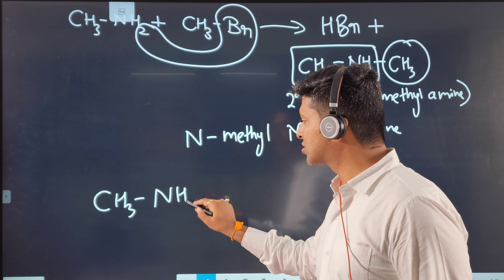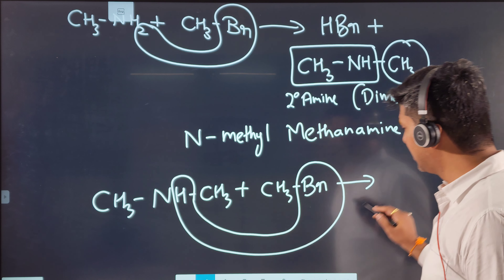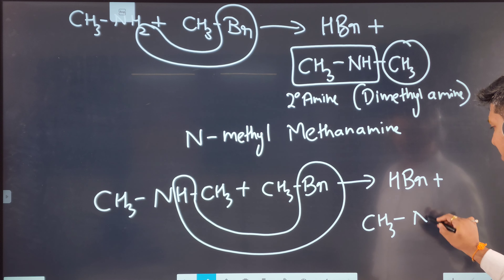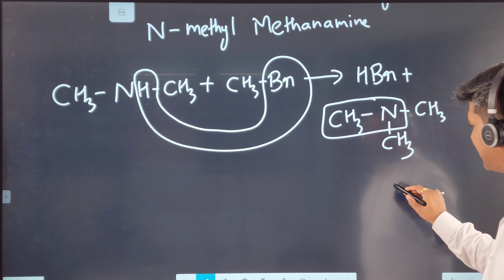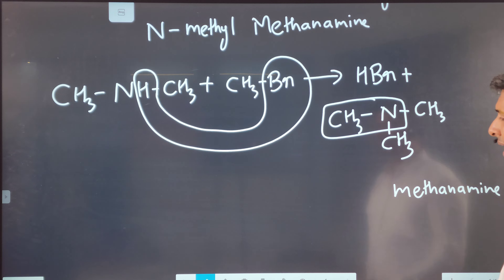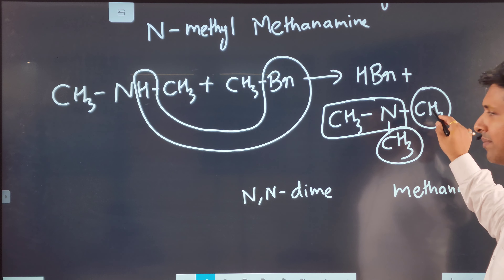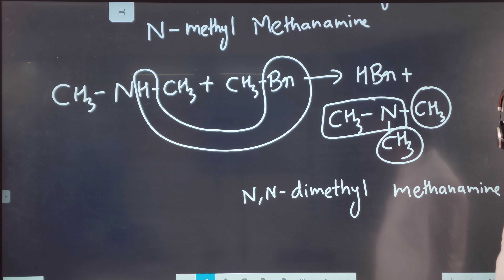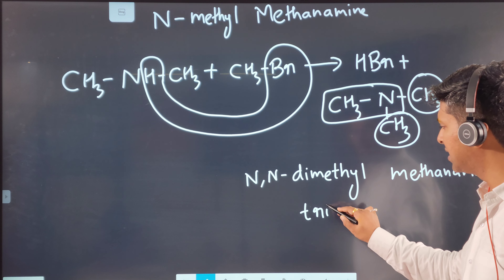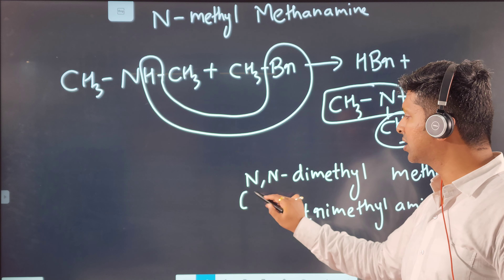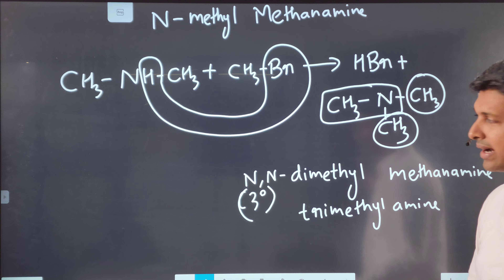Taking that secondary amine and adding one more bromomethane, the last hydrogen and Br form HBr, and a third CH₃ attaches. We now have N,N-dimethylmethanamine — two methyl substituents on nitrogen — so we write N,N-dimethylmethanamine as the IUPAC name. The common name is trimethylamine. This is a tertiary amine: nitrogen is connected to three carbons directly.